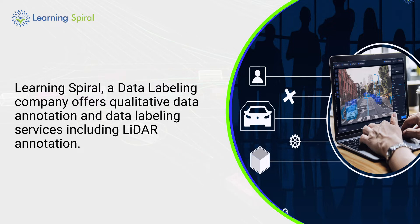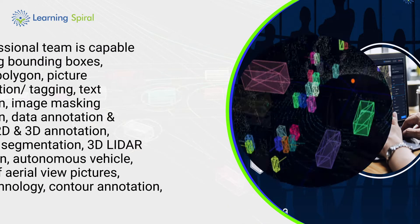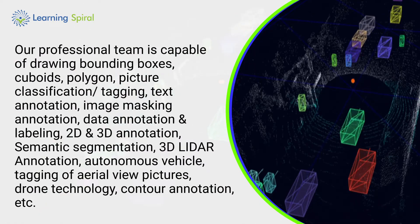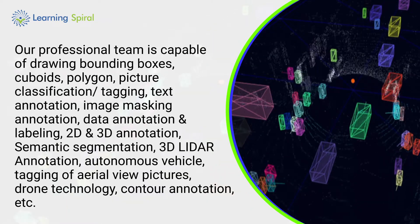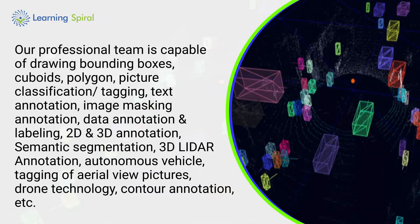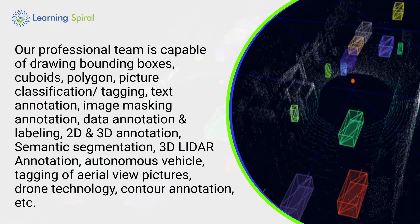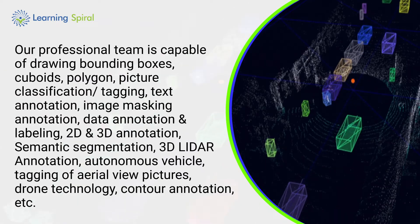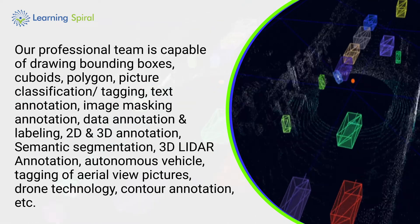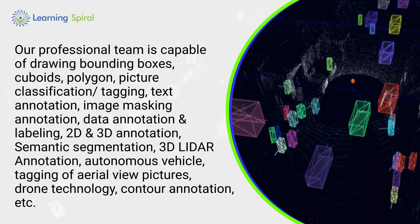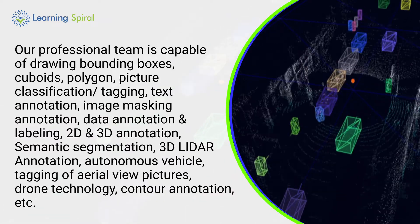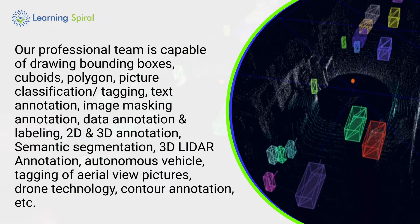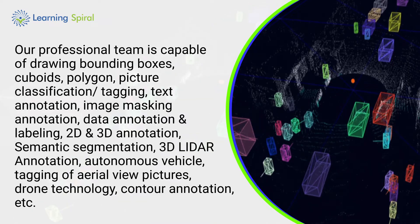Learning Spiral, a data labeling company, offers qualitative data annotation and data labeling services including LiDAR annotation. Our professional team is capable of drawing bounding boxes, cuboids, polygons, picture classification tagging, text annotation, image masking annotation, data annotation and labeling, 2D and 3D annotation, semantic segmentation, 3D LiDAR annotation, autonomous vehicle annotation, tagging of aerial view pictures, drone technology, contour annotation, and more.